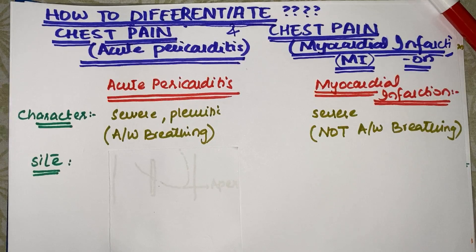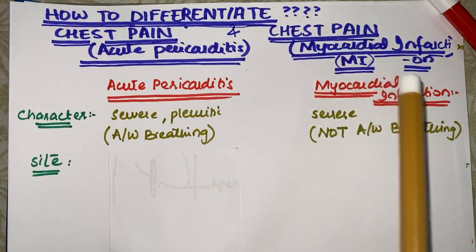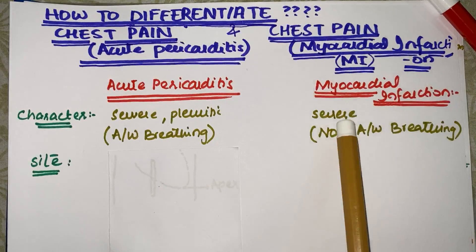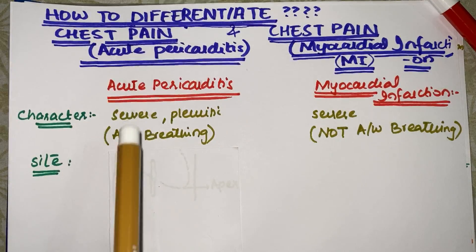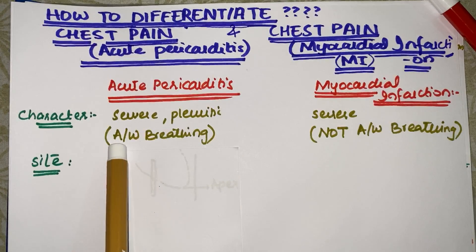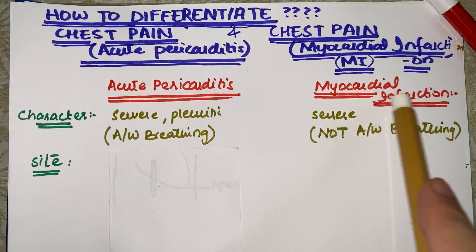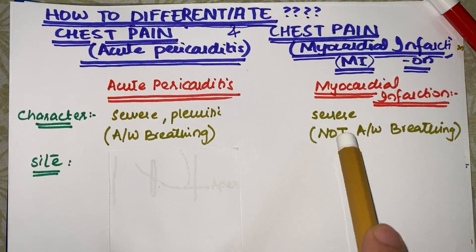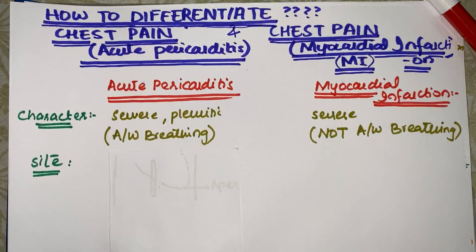Starting with acute pericarditis: the chest pain in acute pericarditis is severe and pleuritic, while in myocardial infarction it is severe but not pleuritic. The word 'pleuritic' means the pain will be associated with breathing. The pain of myocardial infarction will not be associated with breathing. This is the first differentiating point between the two diseases.